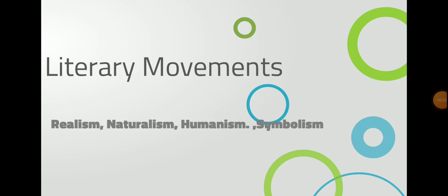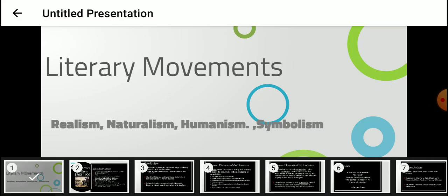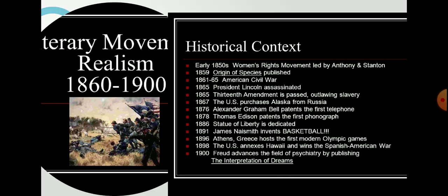In literary movements, we have Realism, Naturalism, Humanism, and Symbolism. The literary movement of Realism spans from 1860 to 1900, after Romanticism. The Realism art movement of the 19th century was a dramatic shift from the exotic and poetic Romanticism that dominated the art world in the decades prior. Literary Realism introduced a new way of writing whose influence can still be seen in American and English literature today.